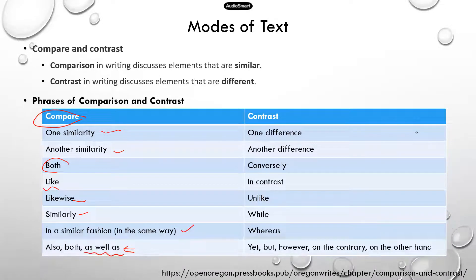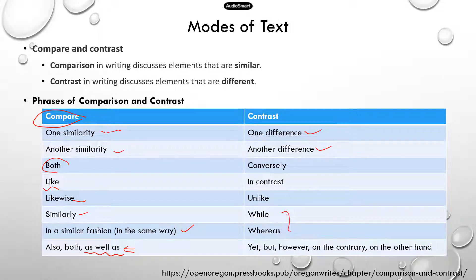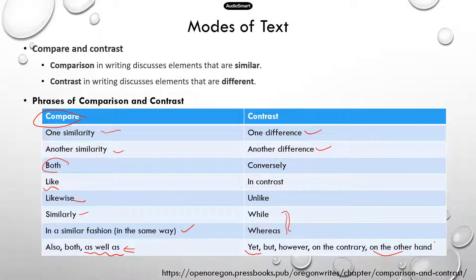Now contrast is about differences. You could talk about one difference and then another difference. Signal words include: conversely, in contrast, unlike, while, whereas, yet, but, however, on the contrary, on the other hand. So those are all signals that the author is talking about the differences.